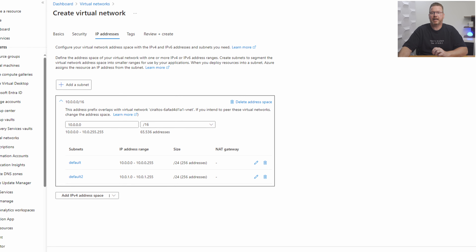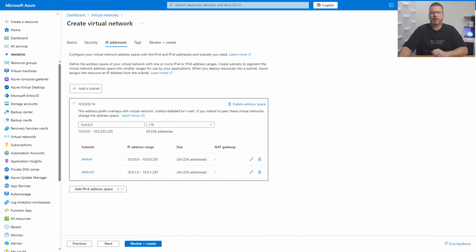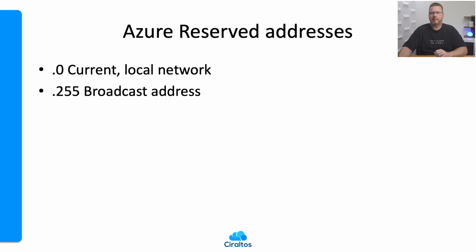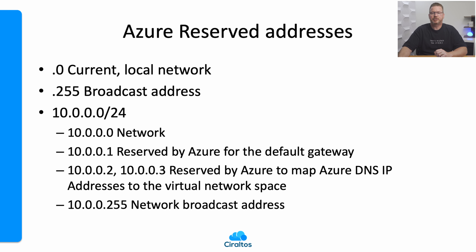The first value — zero — is reserved for the network ID; the last — 255 — is used for a broadcast address, giving us 254 usable IP addresses in each subnet. Let's look at all the reserved IP addresses. The first is reserved to identify the whole current network — usually the dot-zero address. The last is reserved for broadcast. Azure also reserves the first three available IPs: 10.0.0.1 for the default gateway, and 10.0.0.2 and 10.0.0.3 for Azure DNS services. 10.0.0.255 is the broadcast address, used to communicate with all computers on the subnet.